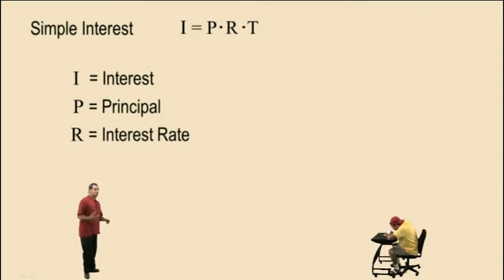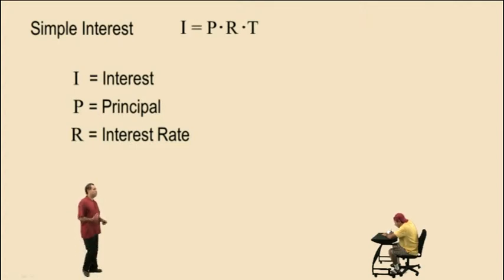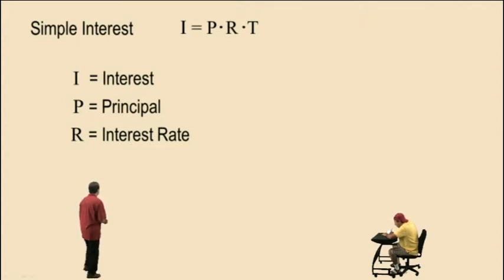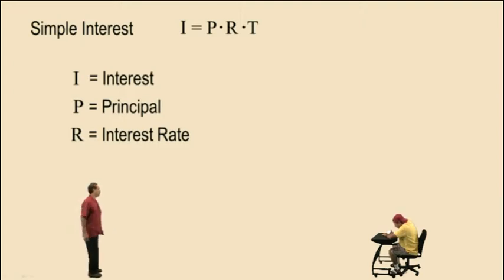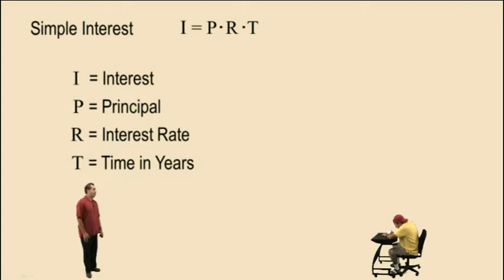R represents the interest rate, which is your percent — not the principal, the interest rate. And T represents the time in years.